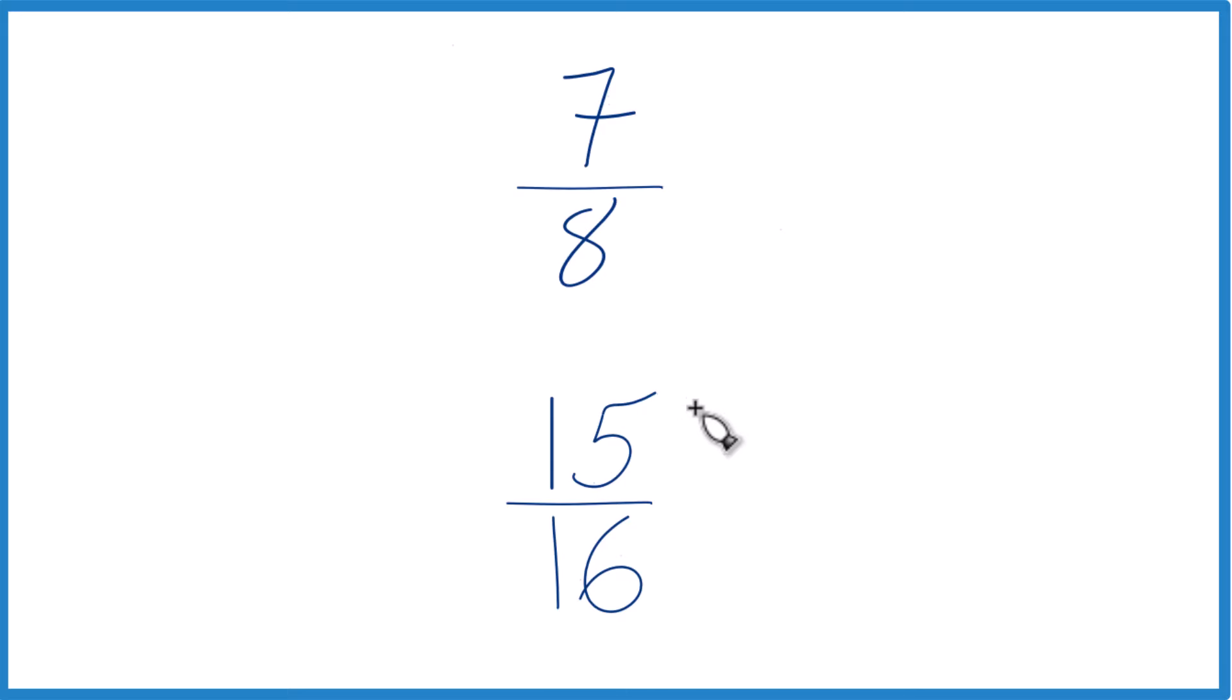The other way to do it is find a common denominator. Right now we have 8 and 16, but if these were the same, we could just compare the numerators and we'd be done.